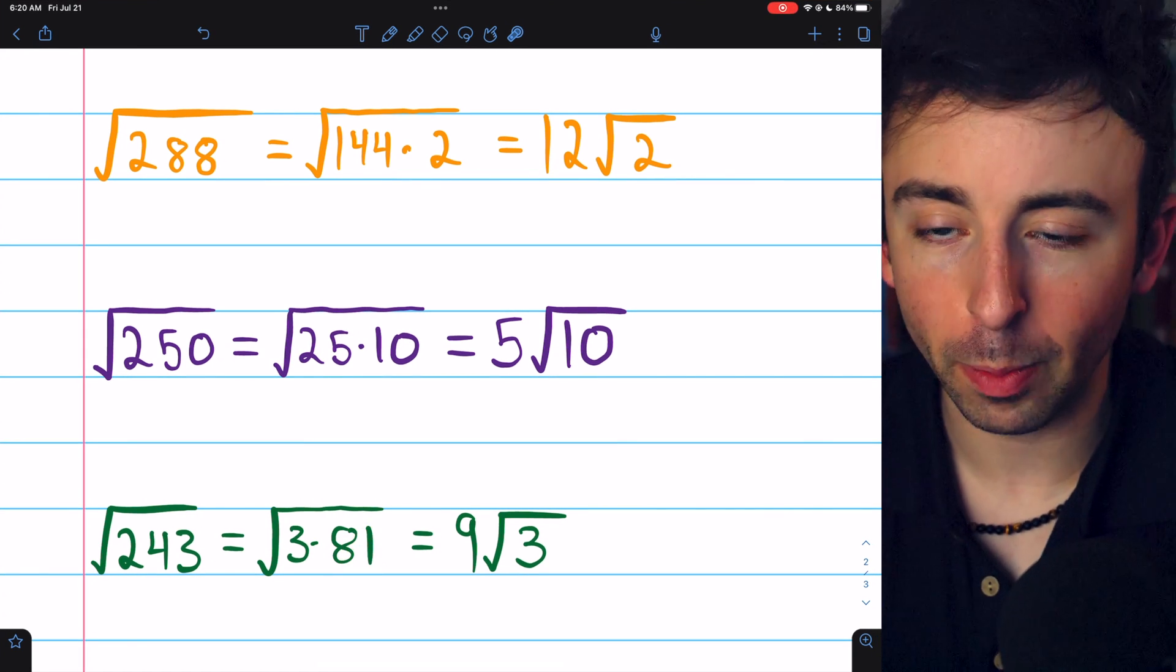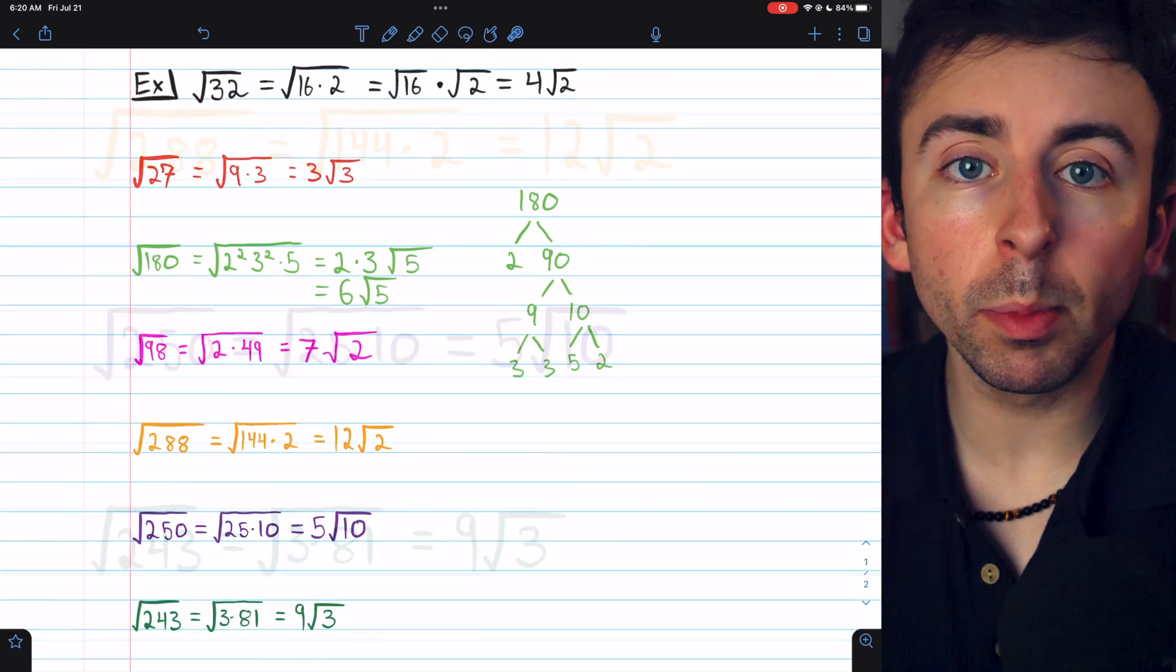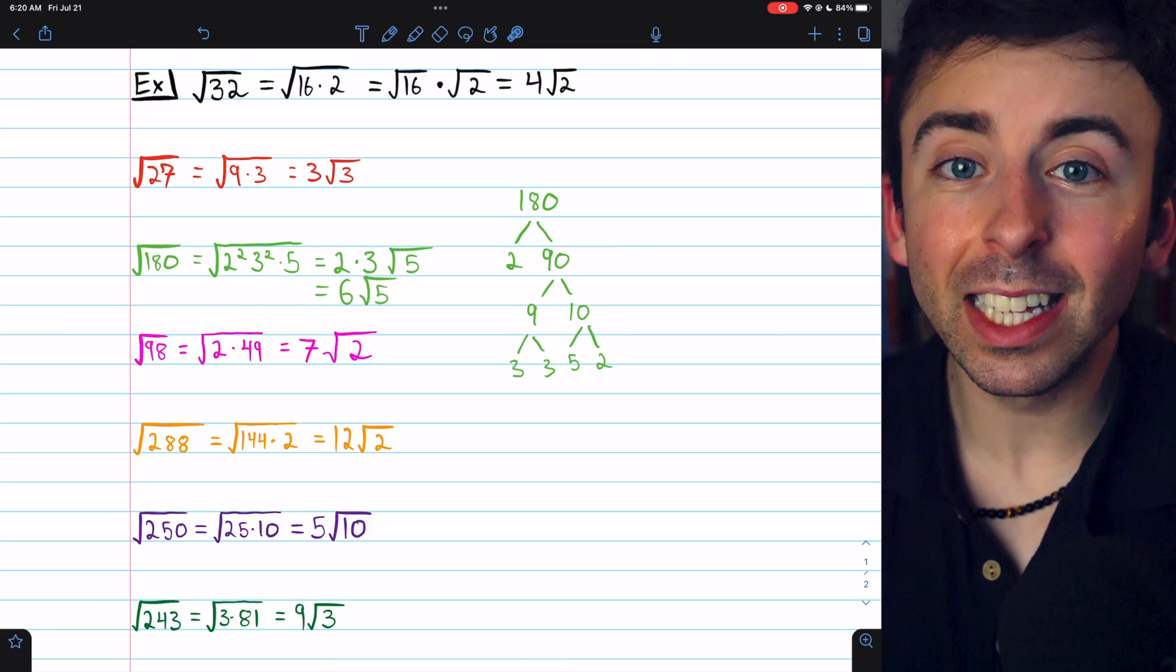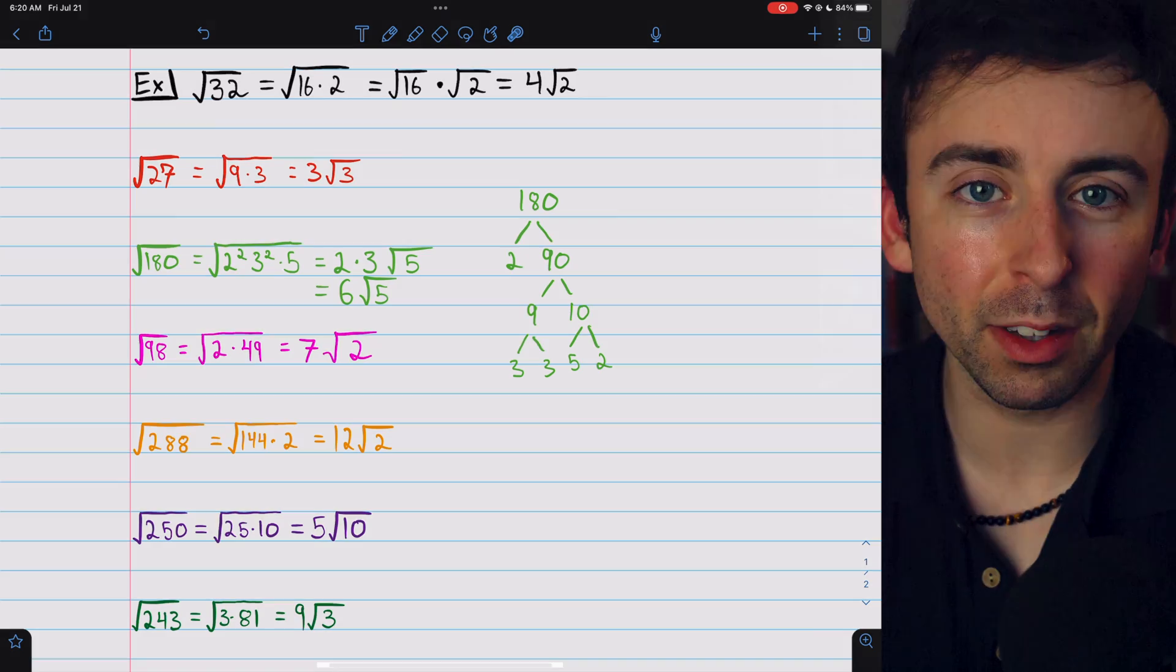81 is a perfect square, and we're able to simplify no problem. Being able to factor and recognizing perfect squares is a key skill for doing this easily. Let me know in the comments if you have any questions. Thanks for watching.